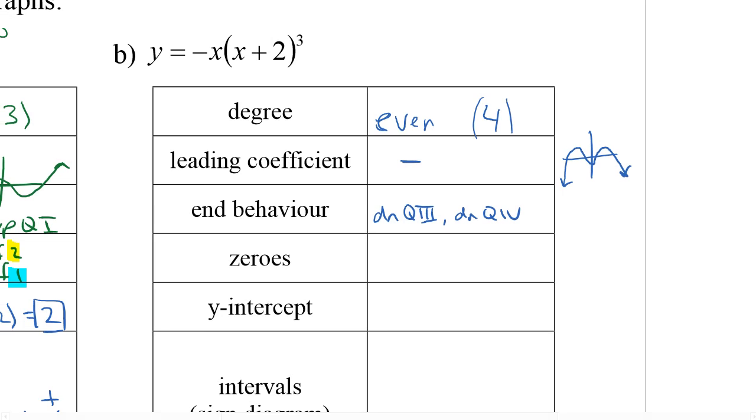The zeros: when is this 0? When x is 0. When is this 0? When x is negative 2. So our two zeros are 0 with a multiplicity of 1, and negative 2 with a multiplicity of 3. At the y-intercept, if I plug in 0 for x, this is going to give me 0, so everything will turn out 0. So the y-intercept will be 0.